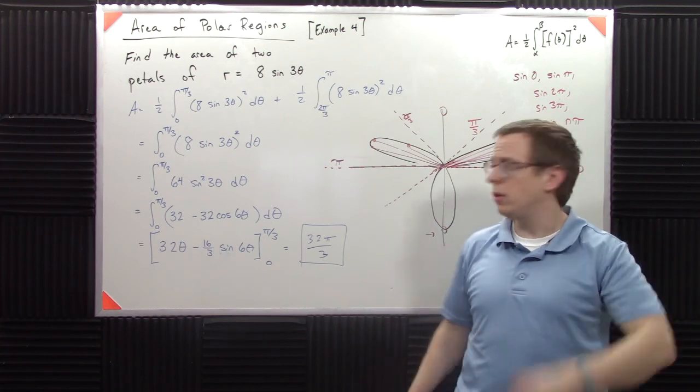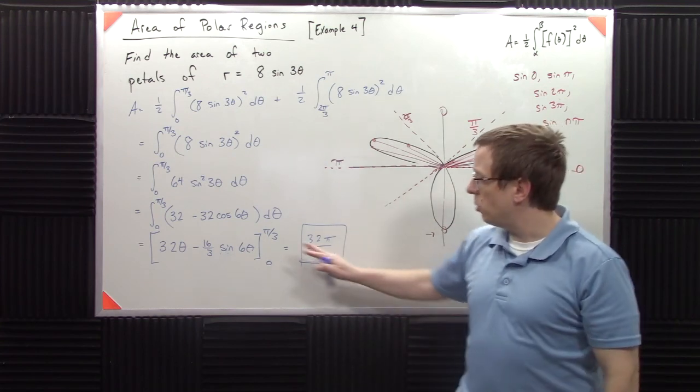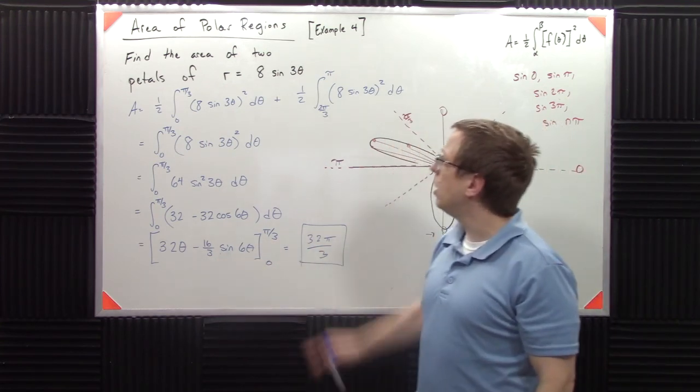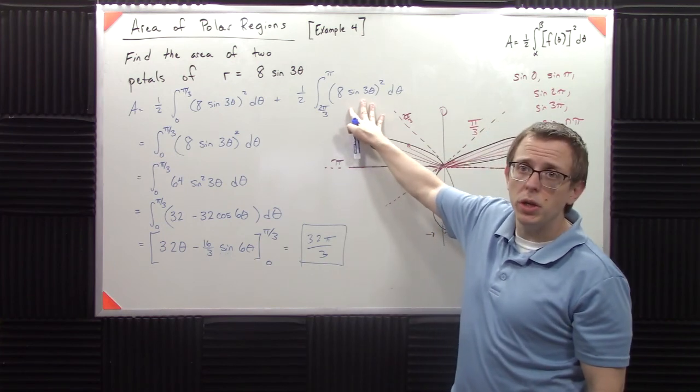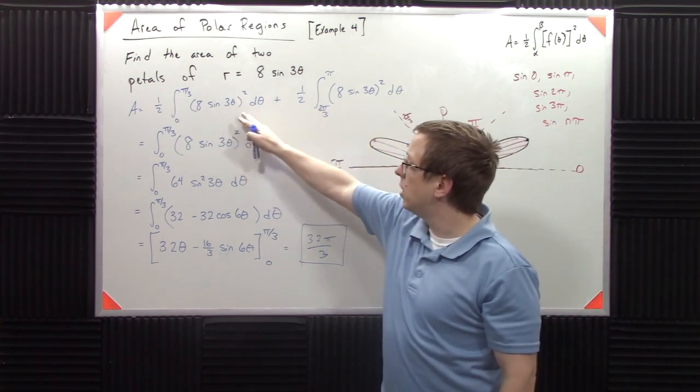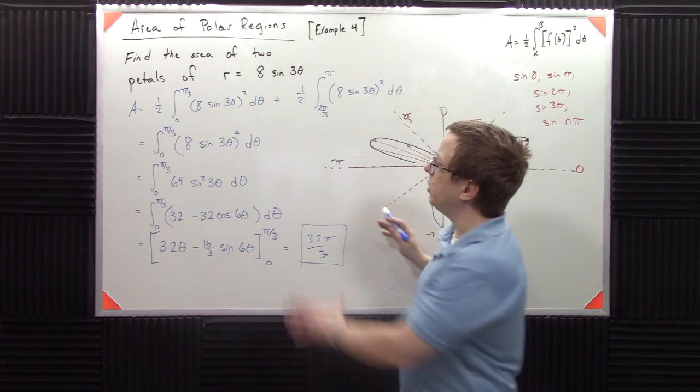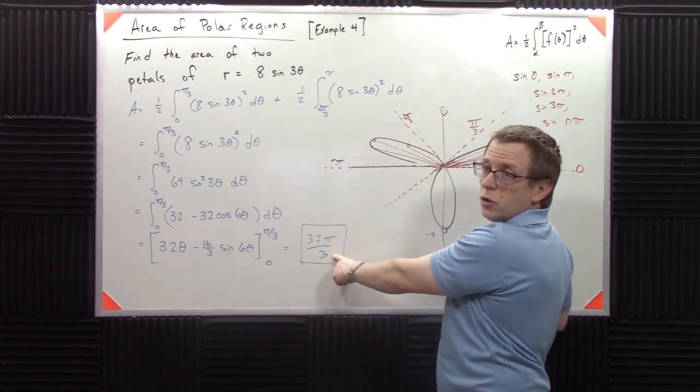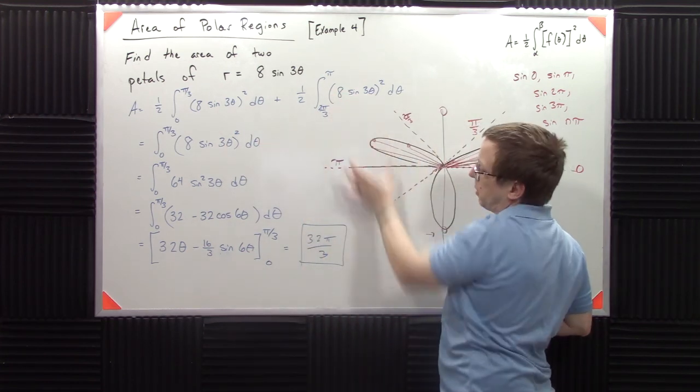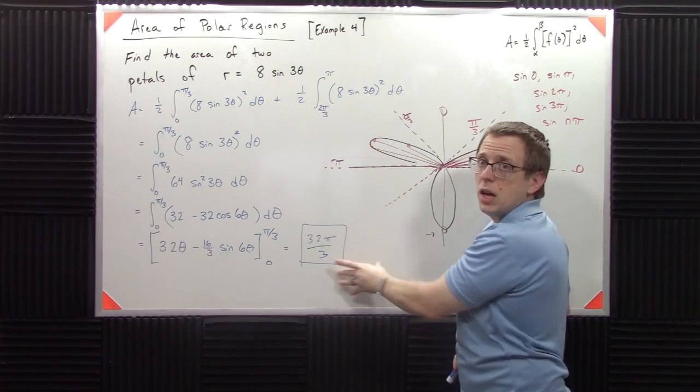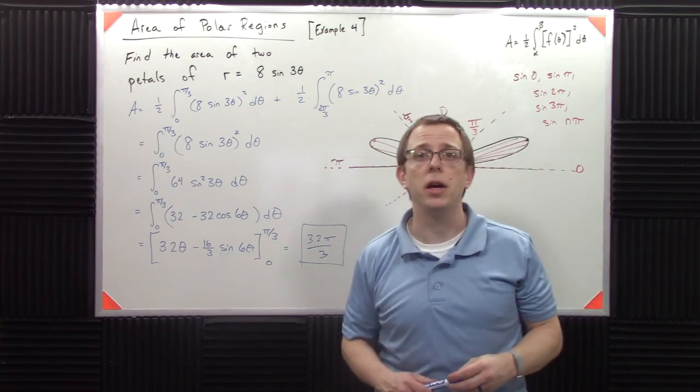You just, you know, you follow the logic. You plug in here. Again, you could absolutely do this separately from this. You know, if you did just this one over here, you'd get 32 pi over six. If you did just this one here, you'd get 32 pi over six. You could add them together to get 32 pi over three.